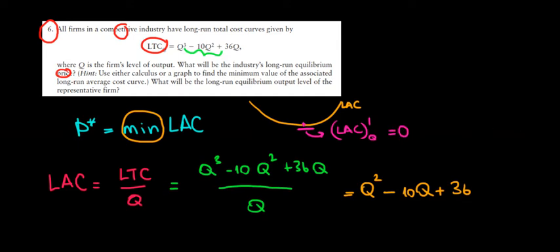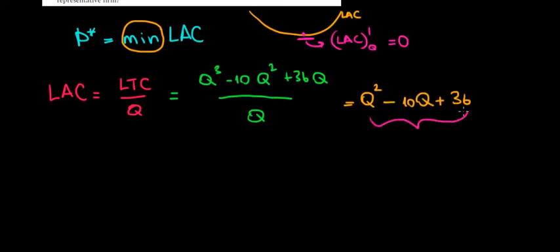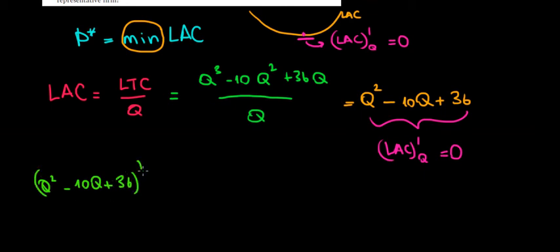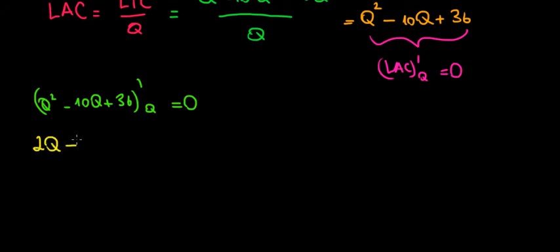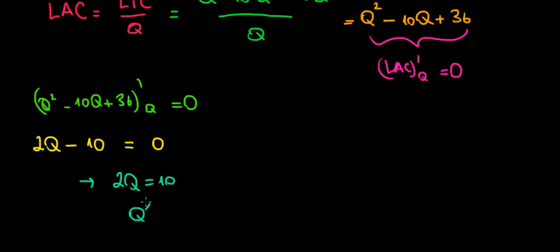We take the long-run average cost we found — Q² minus 10Q plus 36 — and differentiate with respect to Q, setting it equal to zero. The derivative of Q² is 2Q, the derivative of 10Q is 10, and the derivative of the constant 36 is zero. So we get 2Q minus 10 equals zero, meaning the optimal quantity in the long run is Q = 5 units.